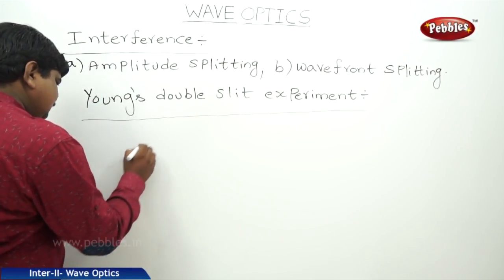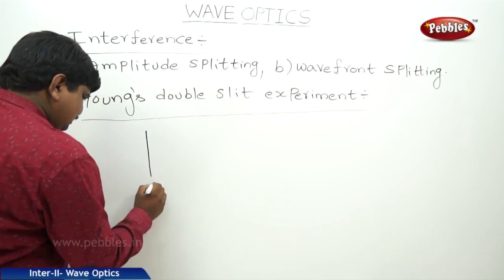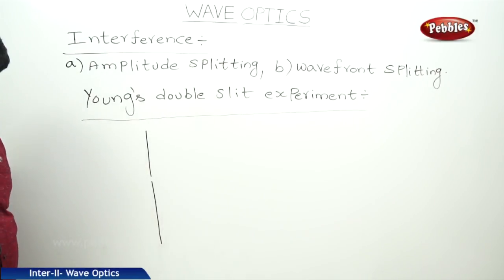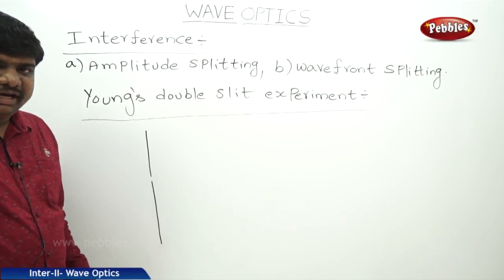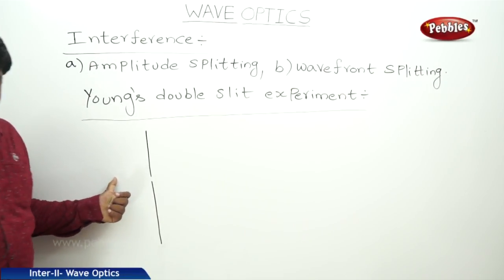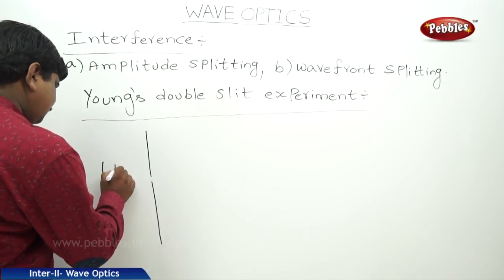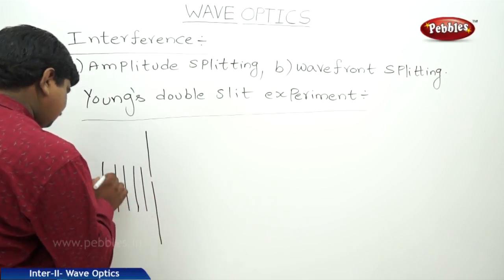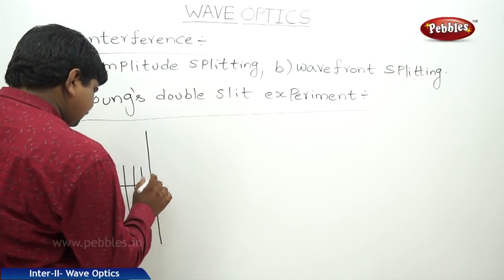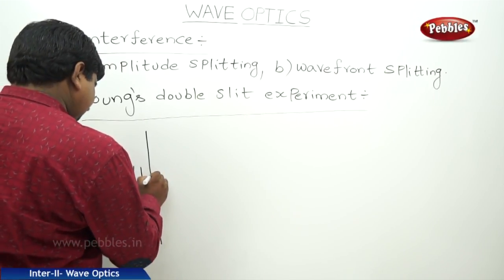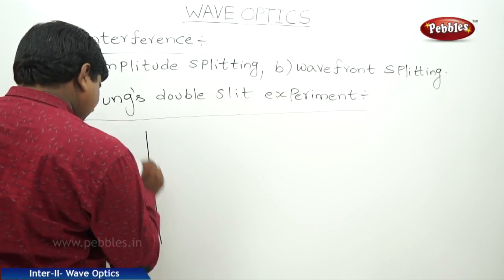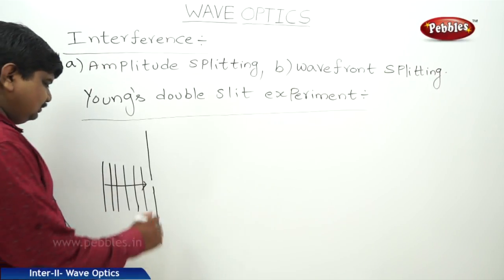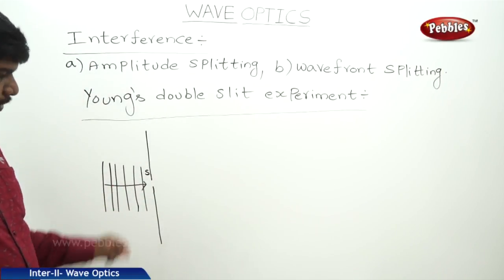For this purpose, let us take a slit. A source of light is just behind this slit. This is the source of light. And at this slit, the source of light splits into two parts.